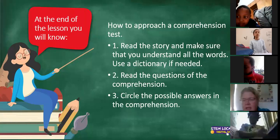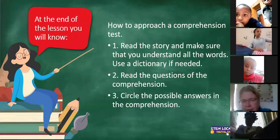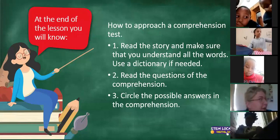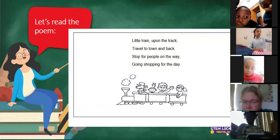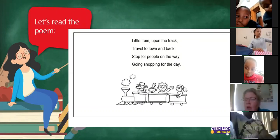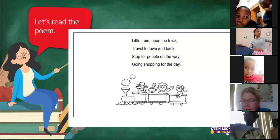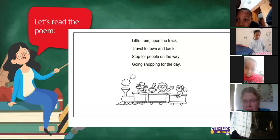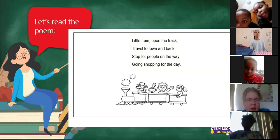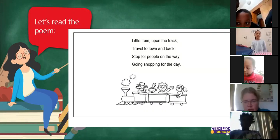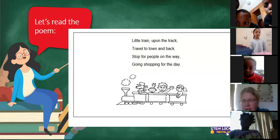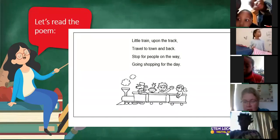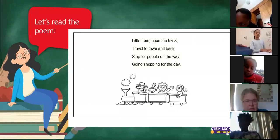Let me just go to my slide. Upon the track, little train upon the track, travel to town and back, stop for people on the way, going shopping for the day. So this is a poem about a train and it sounds like they are on their way to go and buy something at the shop. Is that correct? Okay, let's go to the next slide.